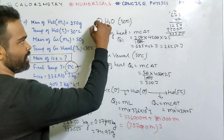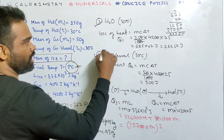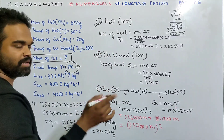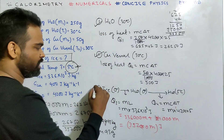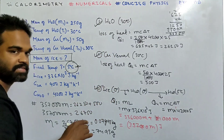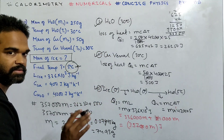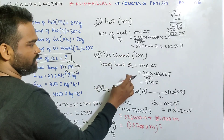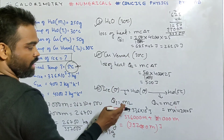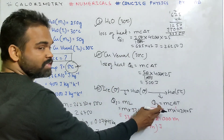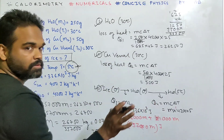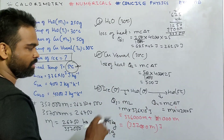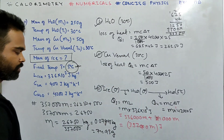Heat lost by water and copper vessel equals heat gained by ice. For the losing side it is MCT + MCT, and for the gaining side it is ML + MCT.